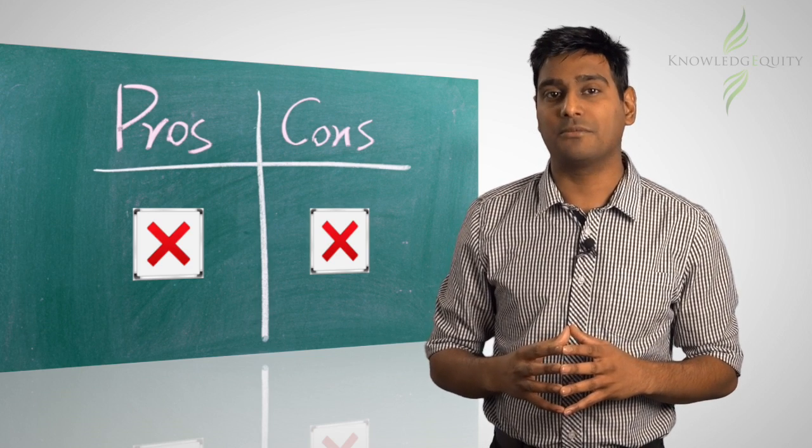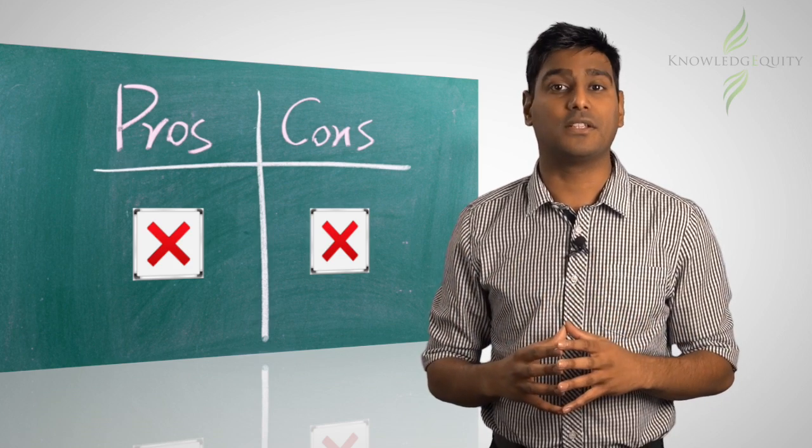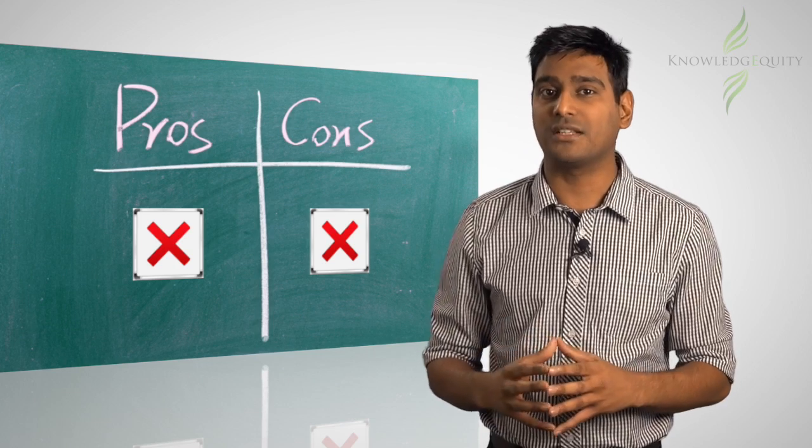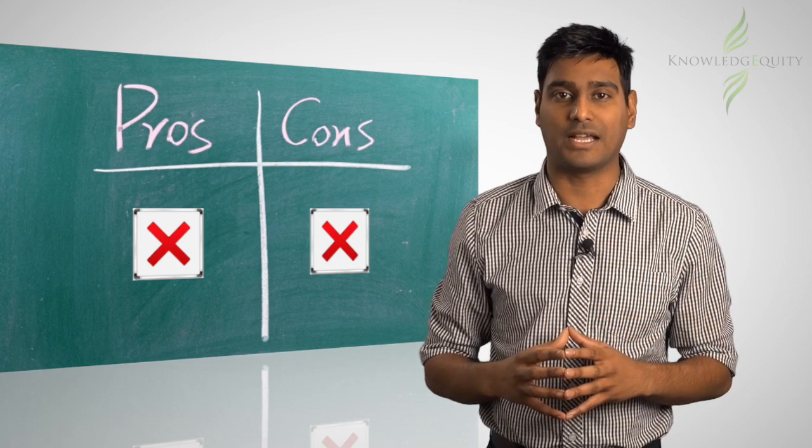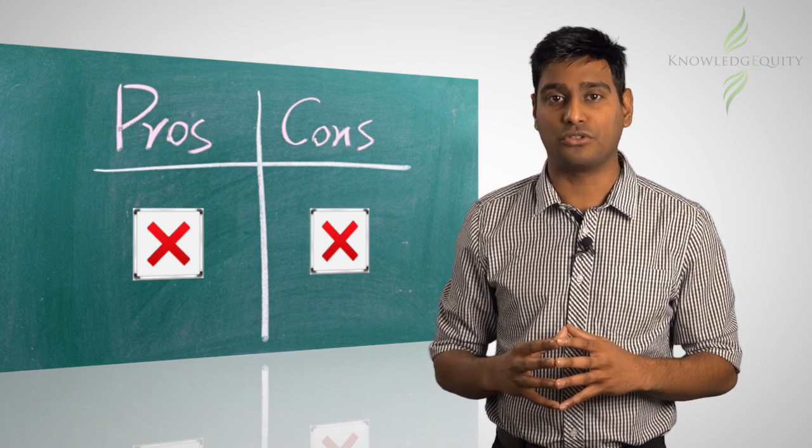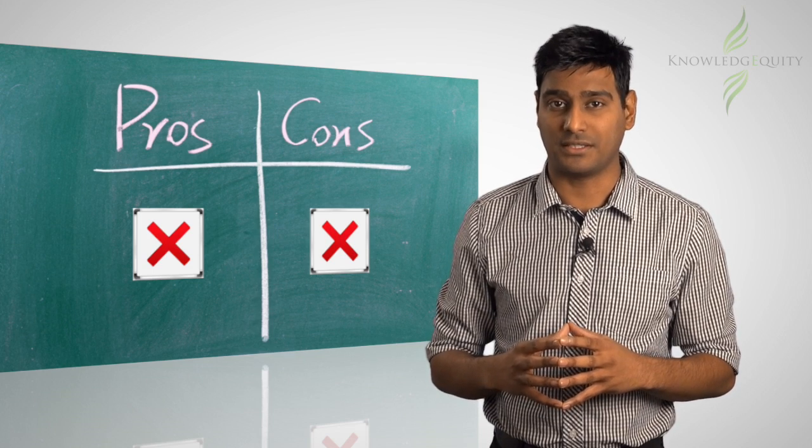Utilitarianism becomes more complicated when the action or decision that results in the greatest benefit to the greatest number of people also results in a cost or disadvantage to others. Therefore, it becomes imperative to use a systematic approach to resolving the problem using this theory.